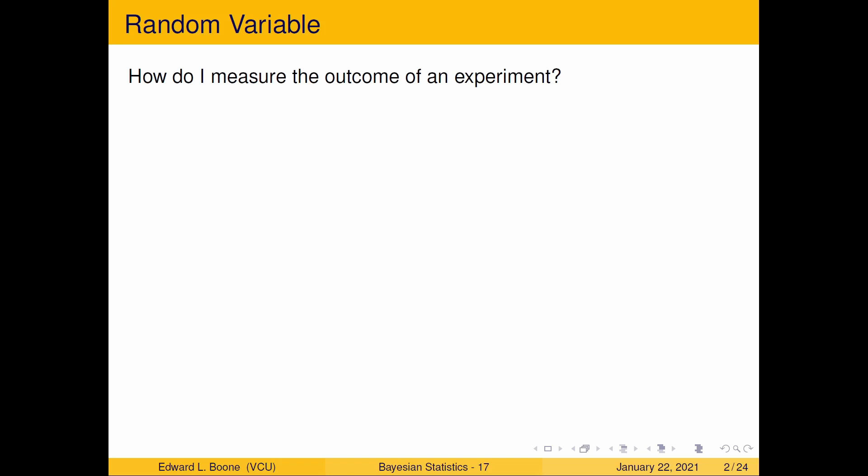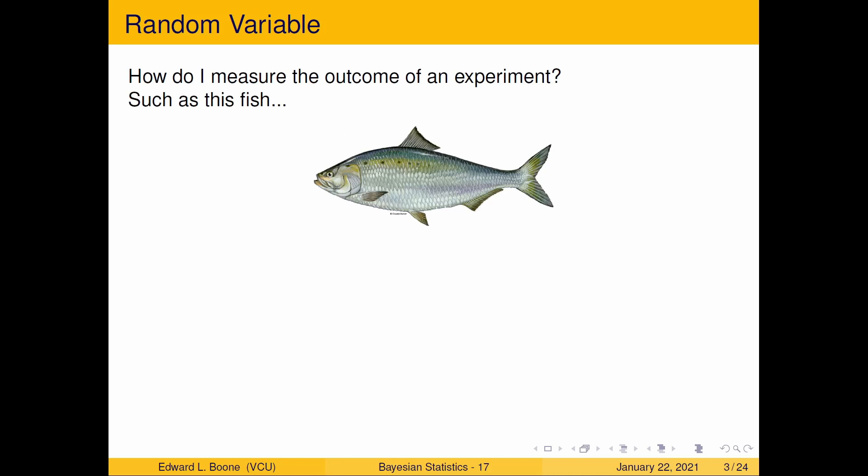In the last one we talked about discrete ones. What about this? This is a fish, it's a shad. How do I measure that? You might think you could measure the weight. That's one way. I can measure the length. I could measure the width. All of these are viable measurements. But the point is you have to clearly define what you're going to measure. Make sure it's clearly defined and that everybody understands what you're measuring.